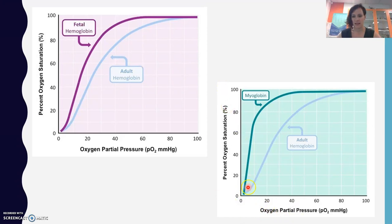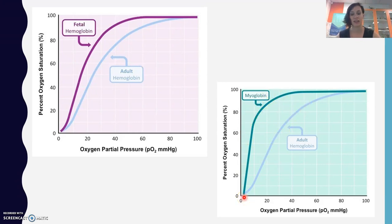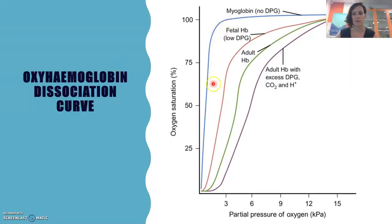On a graph comparing all three, adult hemoglobin, fetal hemoglobin, and myoglobin show very different rates of oxygen saturation as oxygen availability increases. Myoglobin's curve shows it grabbing oxygen at a much higher rate than adult hemoglobin. Even though adult hemoglobin is very effective, myoglobin and fetal hemoglobin are much more effective at binding and keeping oxygen.